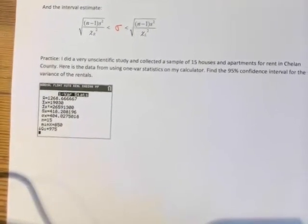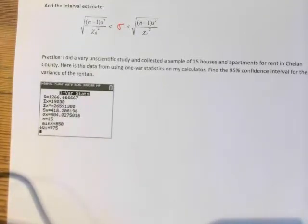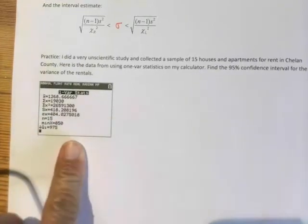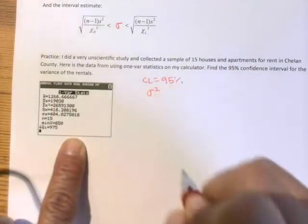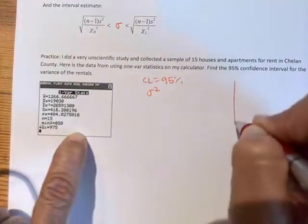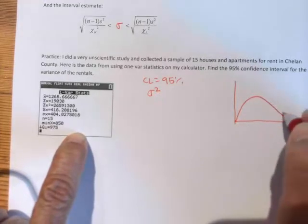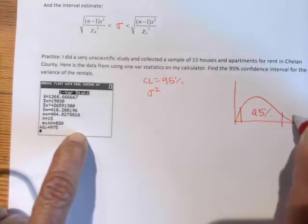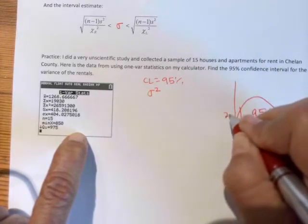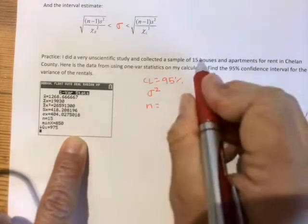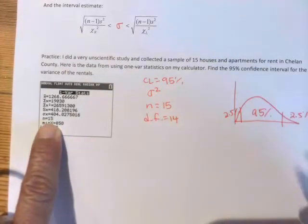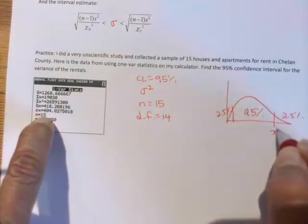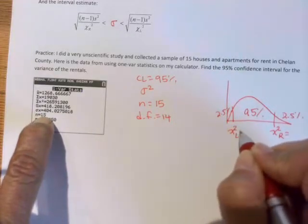So I did a very unscientific study and I collected a sample of 15 houses and apartments for rent in Chelan County. And then I did some one-variable statistics on my calculator and this is what I found, this little screen shot. So let's find the 95% confidence level for the variance. So we're looking at sigma-squared of the rentals. So I'm going to go ahead and draw a picture so I can get my chi-square values. So 95% in the middle, so 2.5% on the sides.